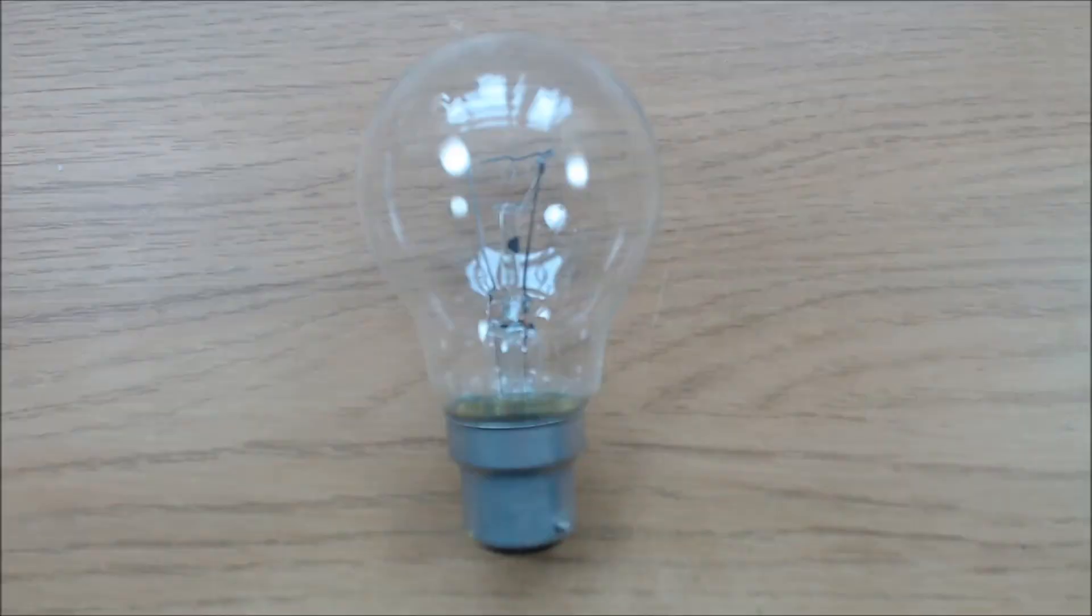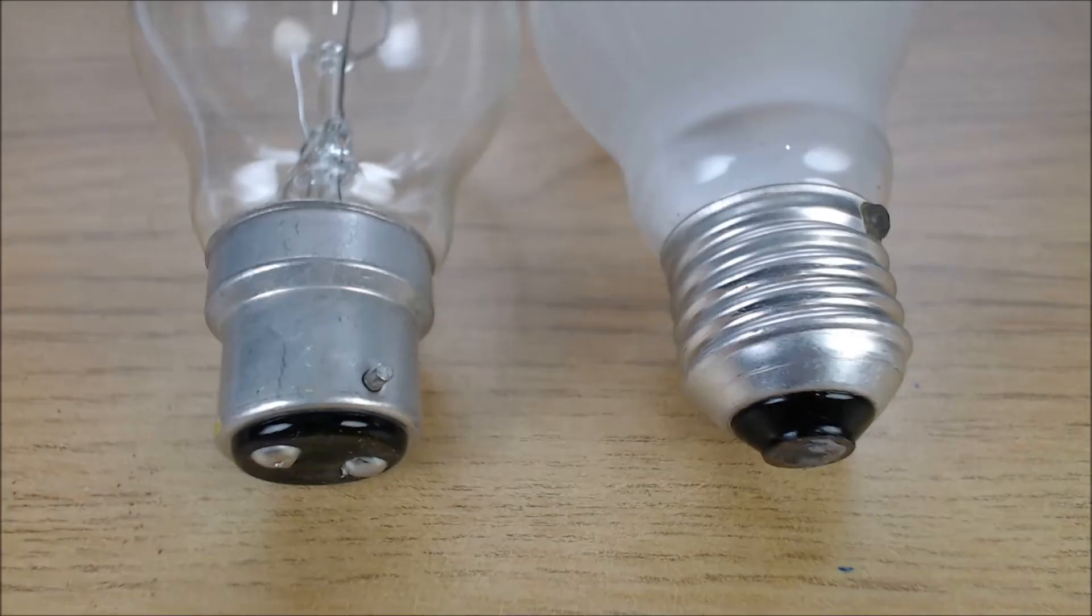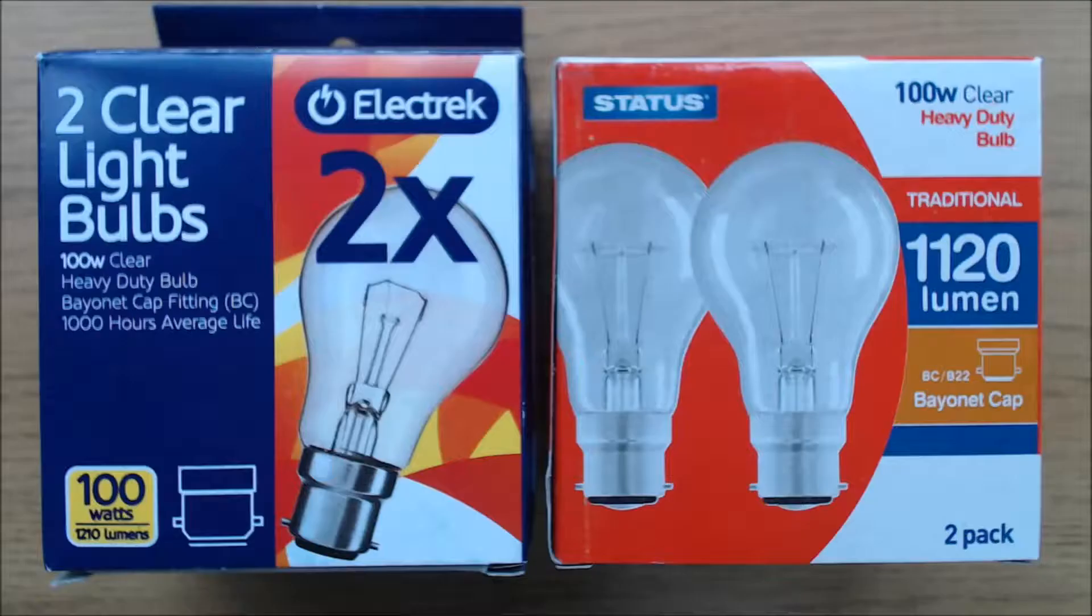The materials that I have used are a clear light bulb. This can either be the bayonet type that's common in the UK or the Edison screw type. If you're looking for these in the UK, they're commonly called rough service or heavy duty lamps. I got two for a pound in a pound shop.